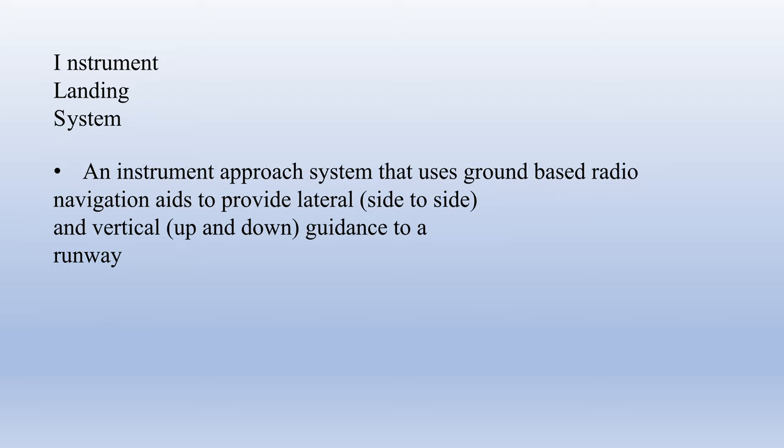So what is an ILS? An ILS, or instrument landing system, is an instrument approach system that uses ground-based radio navigation aids to provide lateral (left and right) guidance as well as vertical (up and down) guidance to a runway. Since it provides both types of guidance using ground-based equipment, it's considered to be a precision approach. It's probably the most commonly used type of precision approach in the world and the most common type of instrument approach used at commercial airports.